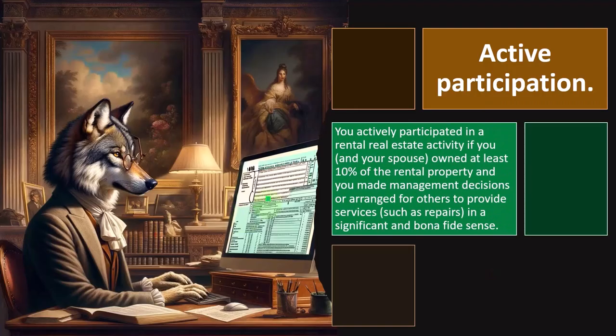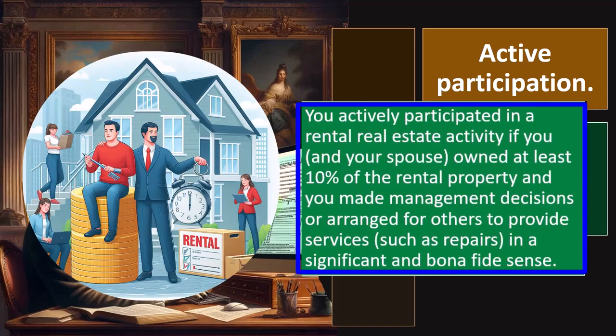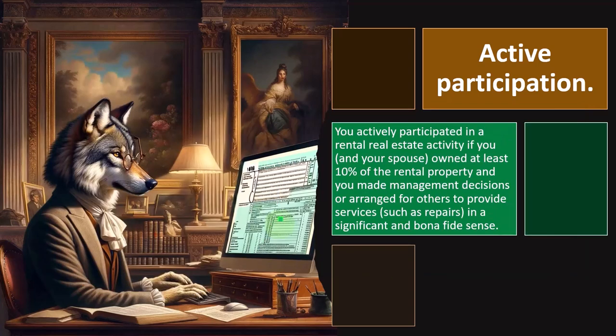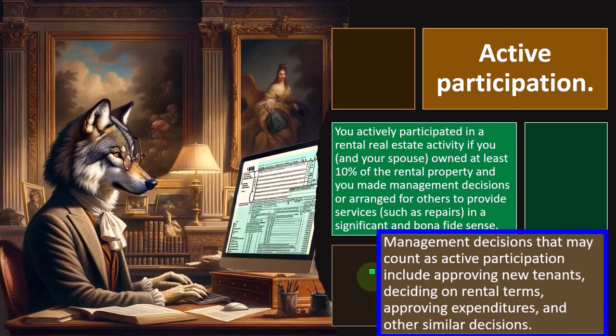Active participation: You actively participated in a rental real estate activity if you and your spouse owned at least 10% of the rental property and you made management decisions — dealing with tenant calls, sending out plumbers, and managing repairs in a significant and bona fide sense. Management decisions that may count as active participation include approving new tenants, deciding on rental terms, approving expenditures, and other similar decisions.